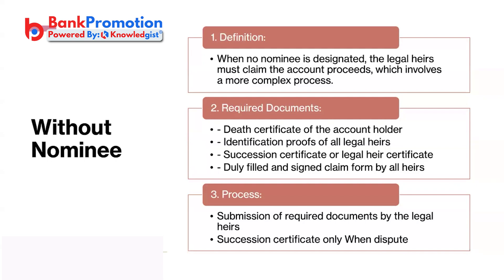If there are, say, five legal heirs, all five come to the branch, submit documents, and one person is nominated as the claimant on behalf of all. The other four give a no-objection declaration, and the bank processes the claim through its internal form.